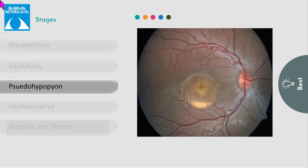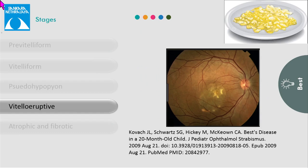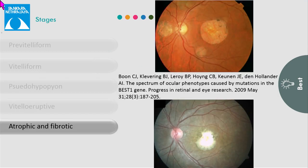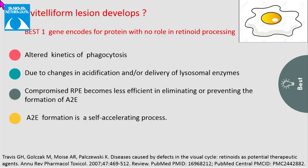In the pseudohypopion stage, the yellow material gravitates and accumulates inferiorly, forming a horizontal demarcation line. In the vitelleruptive stage, there is partial resorption of this material, giving rise to a scrambled egg appearance. After the dynamic alternating processes of material accumulation and resorption, it ultimately leads to formation of an atrophic or fibrotic lesion.